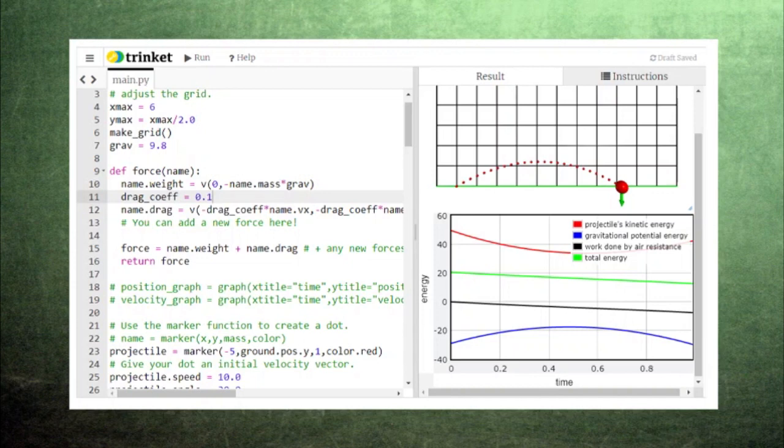And the work done by the force of air resistance also tracks downward, accounting for the loss of energy. The identical shape of these two graphs shows where our lost energy is going into the atmosphere.